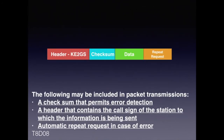For the exam, you need to know the different parts of a packet transmission such as headers, checksums, data, and repeat requests. Specifically, know that a packet transmission may include: a checksum that permits error detection, a header that contains the call sign of the station to which the information is being sent, and an automatic repeat request in case of error.